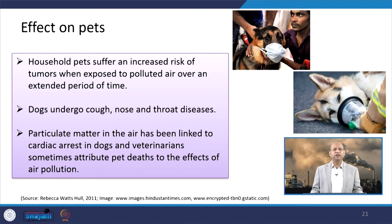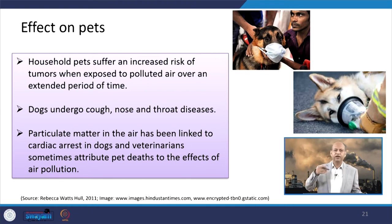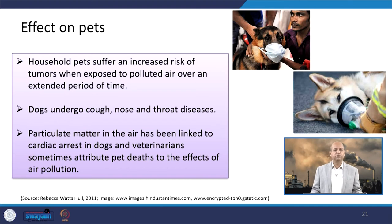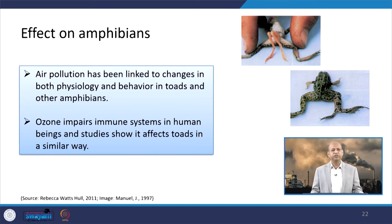Household pets suffer an increased risk of tumors when exposed to polluted air over an extended period of time. They can go through coughing and nose and throat disease and infections in polluted environments. Particulate matter in the air has been linked to cardiac arrest — like heart attacks, as happens in human beings. Many veterinary doctors say that pet deaths are related to high air pollution levels. For amphibians, ozone impairs the immune system in both human beings and animals like toads.